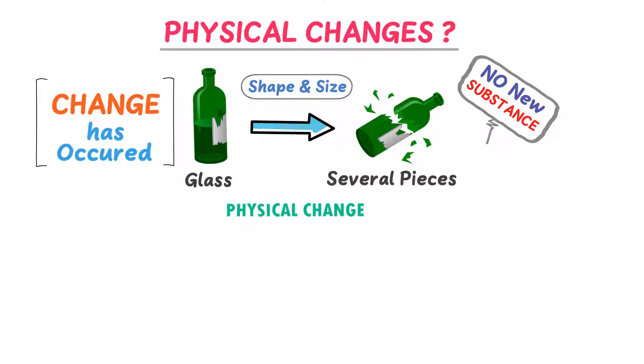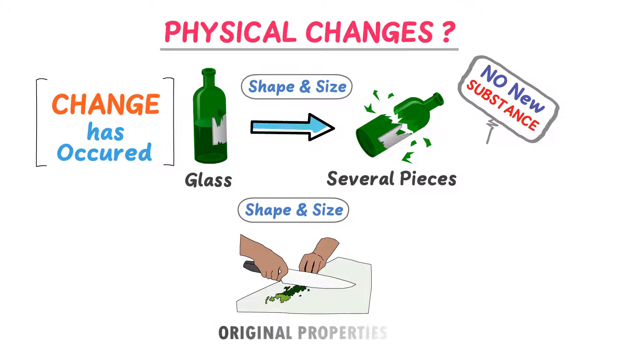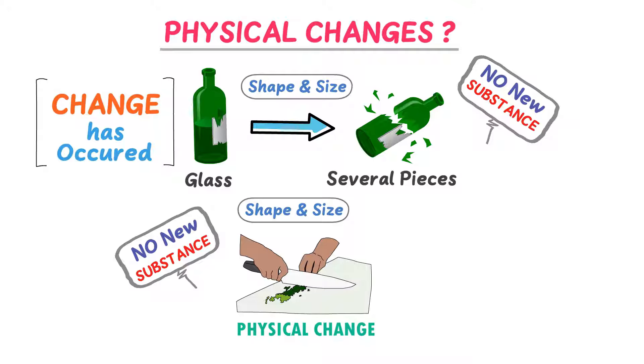The second example of physical change is cutting vegetables. You just change its shape and size. The vegetables still retain their original properties. You do not get something new or a new substance. So cutting a vegetable is also an example of physical change.